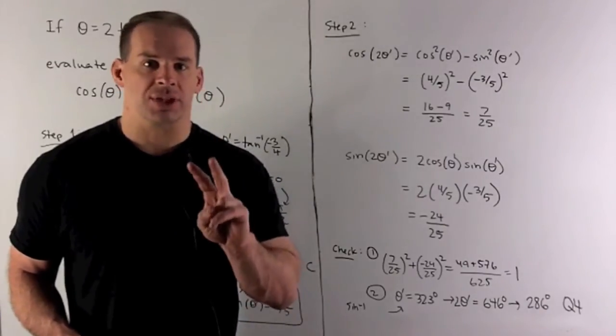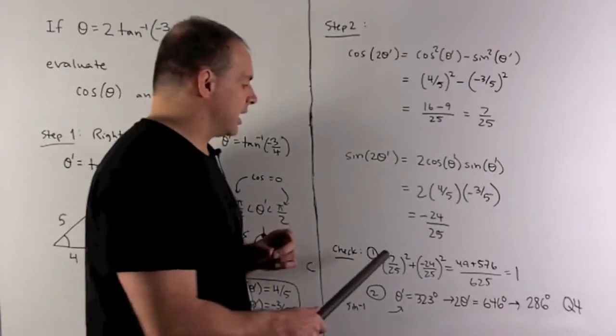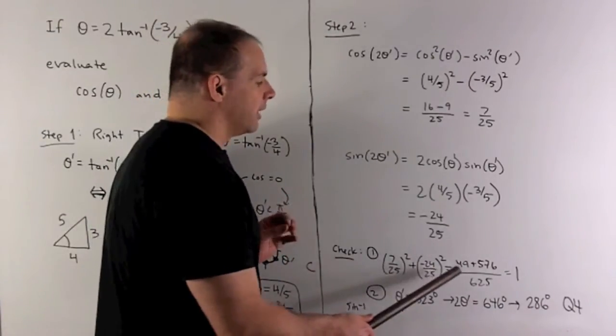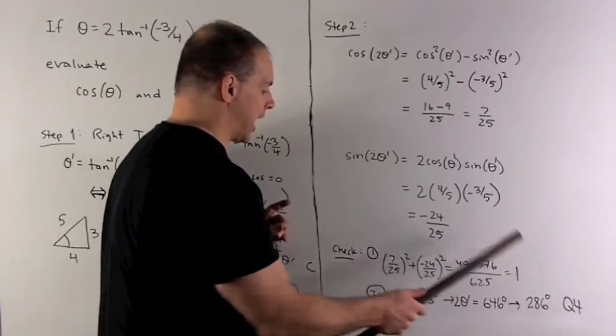Okay, so how do we check? Two things. First, take the sum of the squares. We should get a one. So if we work it out, that's going to happen. So that checks.